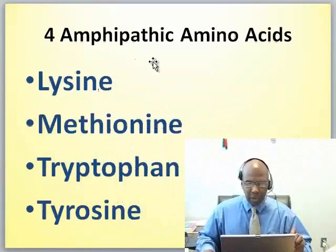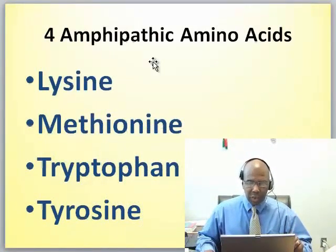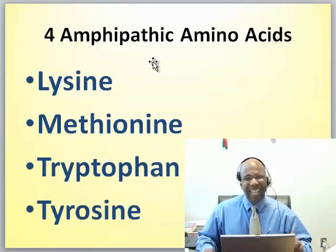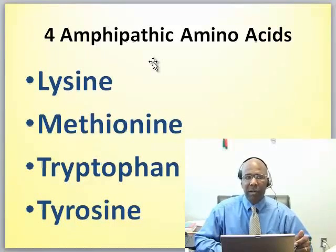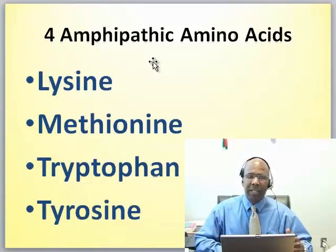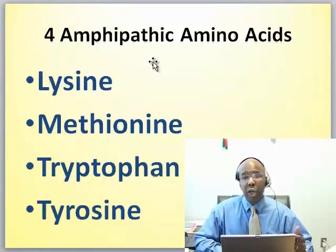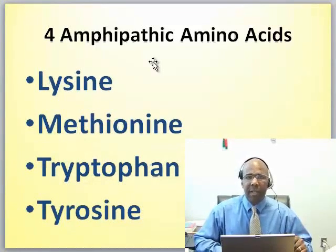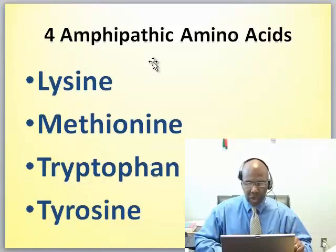These four amphipathic amino acids are lysine, methionine, tryptophan, and tyrosine. After this, we may talk about amino acid derivatives that can be found in other organisms or that can be used for other purposes, like neurotransmitters and hormones. But for now, let's just talk about the four amphipathic amino acids.